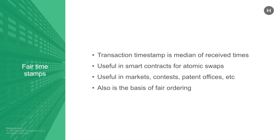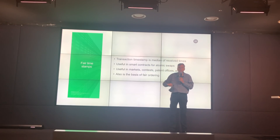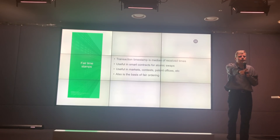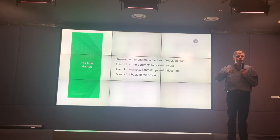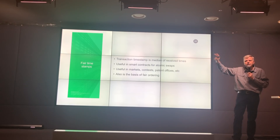In this system, no one computer can affect the time too much — all of the community controls what the time is, they all collaborate, and so the timestamps end up being fair. Why would it be useful to have a ledger where you can count on the timestamp being fair? One example is atomic swaps: when you do atomic swaps with another ledger, the security of the standard way of doing it comes down to whether you can trust the timestamps. Having a good timestamp is important for atomic swaps. They're also useful if you have a stock market — the fairness of ordering is very important. You can trust that it's going to be fair what order transactions come in.